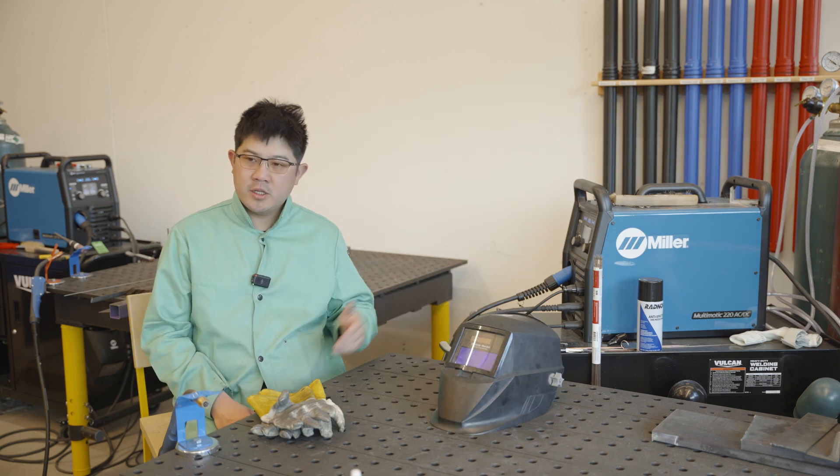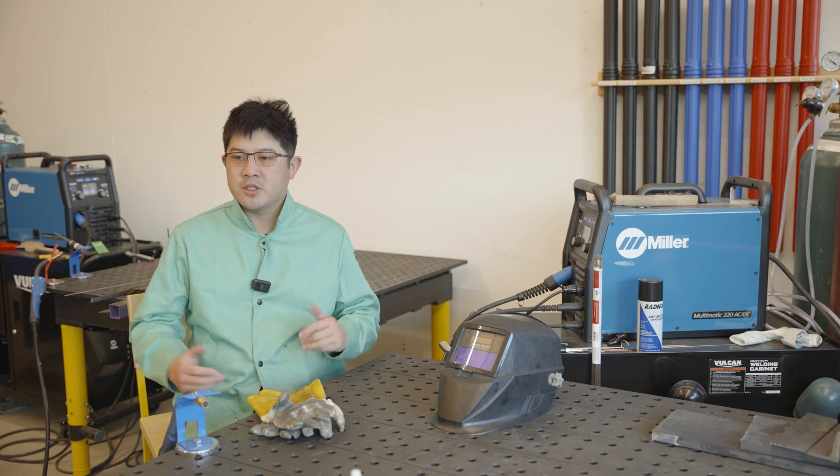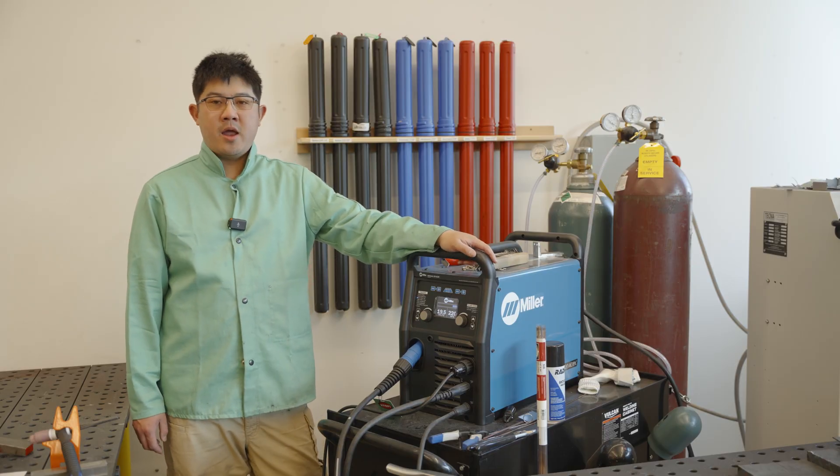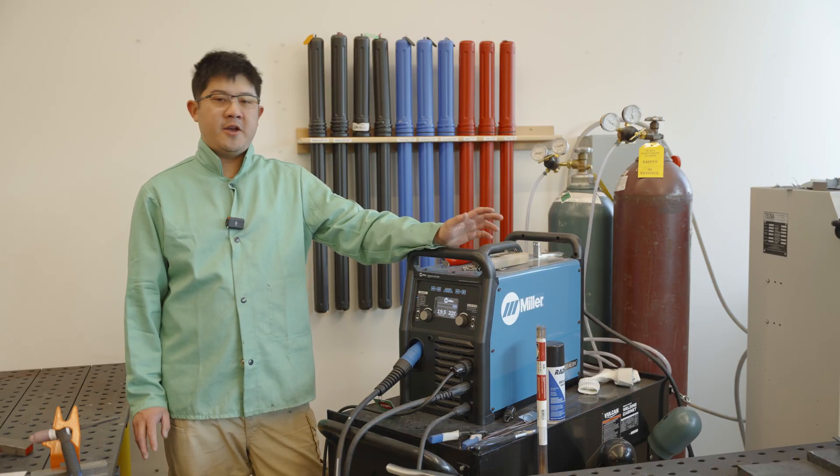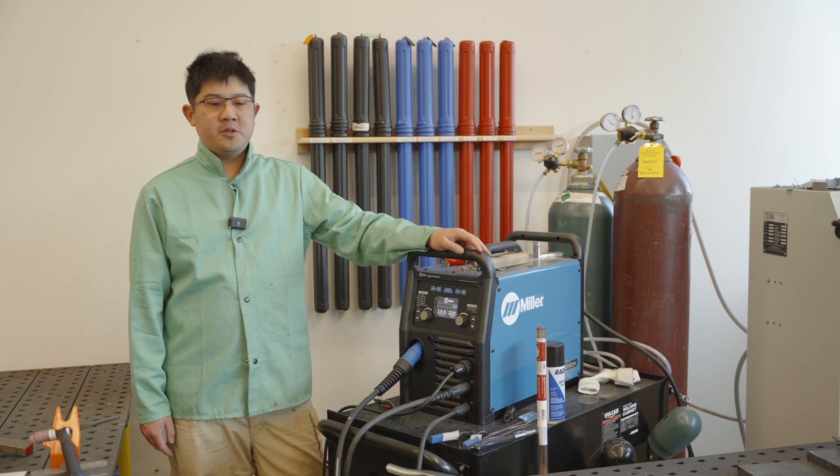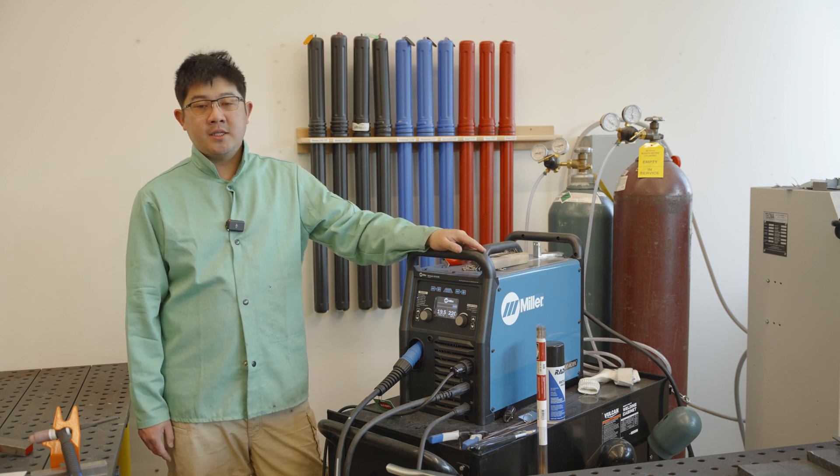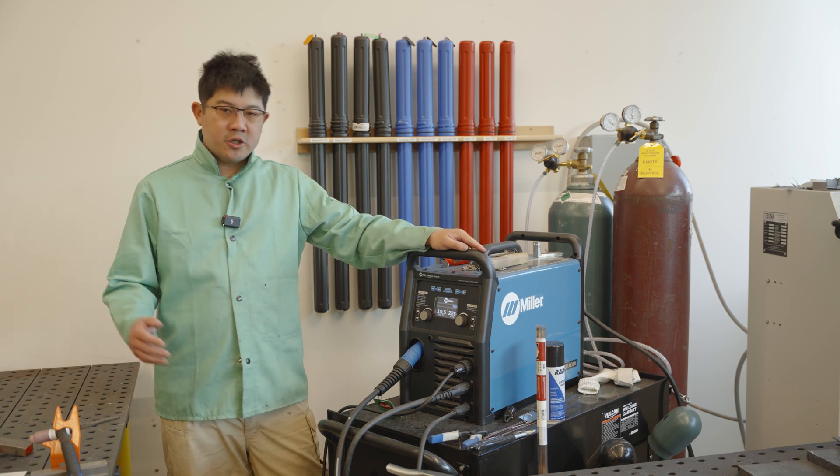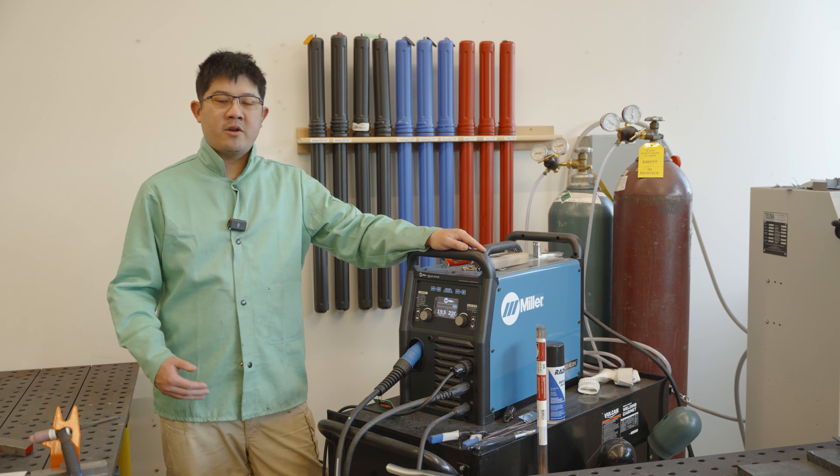Okay, so up next, let's talk about the machine and some of the setup we have to do with the machine before we can start welding. So we have these Miller Multimatic 220 machines. They're fantastic welders. The cool thing about these machines is they do MIG, TIG, and stick welding all in one machine. In future videos, we'll talk about the other features, but today we're going to focus on MIG welding.